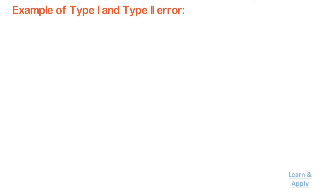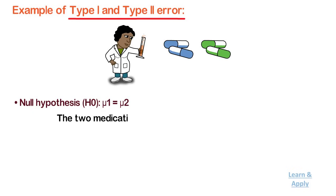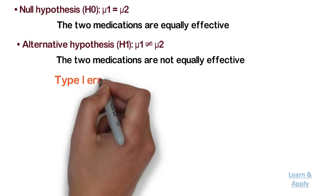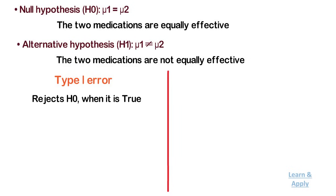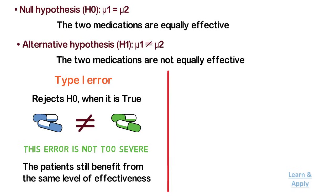Example of type 1 and type 2 errors: a medical researcher wants to compare the effectiveness of two medications. The null hypothesis is H0: μ1 = μ2 — the two medications are equally effective. The alternative hypothesis is H1: μ1 ≠ μ2 — the two medications are not equally effective. A type 1 error occurs if the researcher rejects the null hypothesis and concludes that the two medications are different when in fact they are not. If the medications have the same effectiveness, the researcher may not consider this error too severe because the patient still benefits from the same level of effectiveness regardless of which medicine they take.